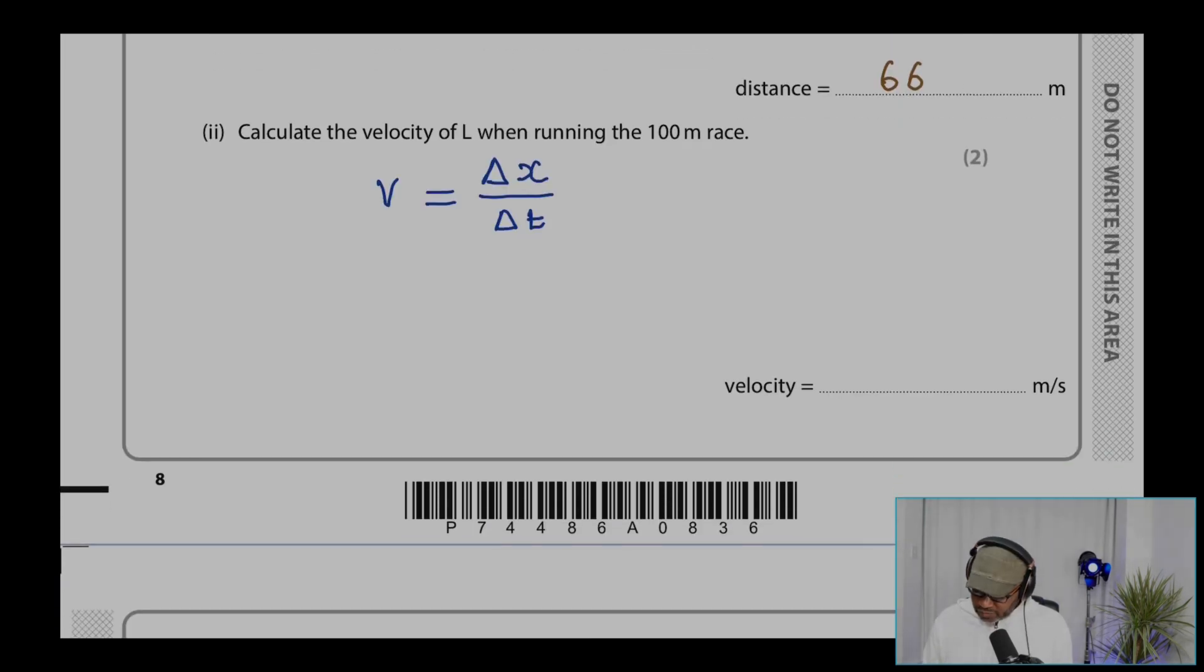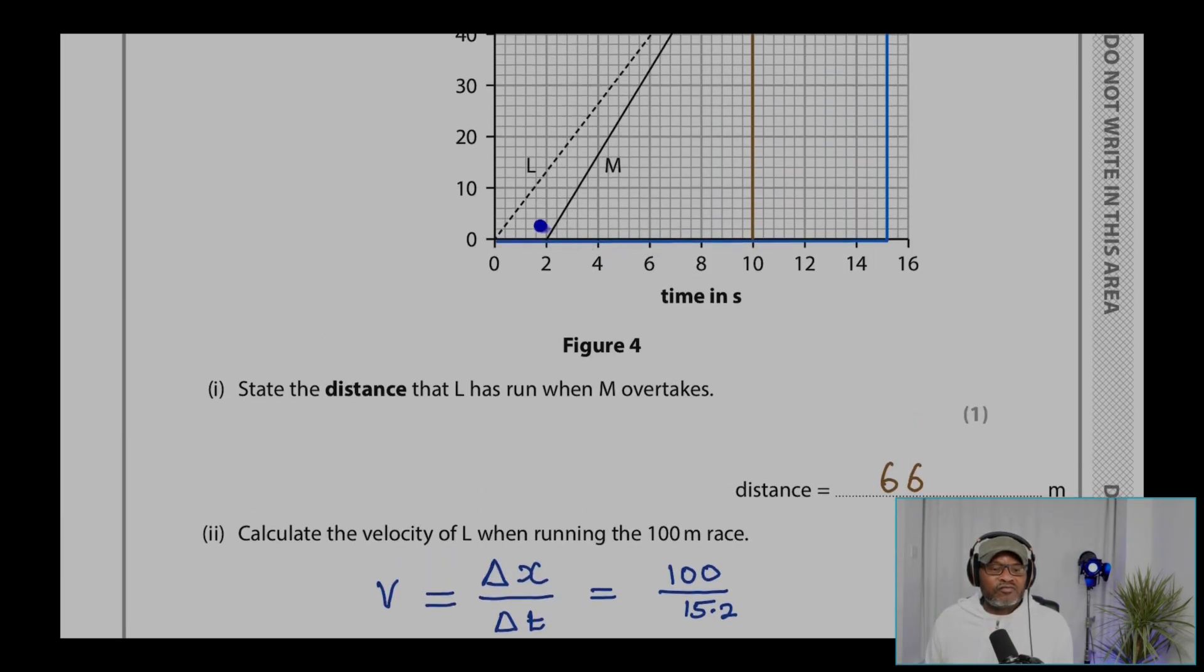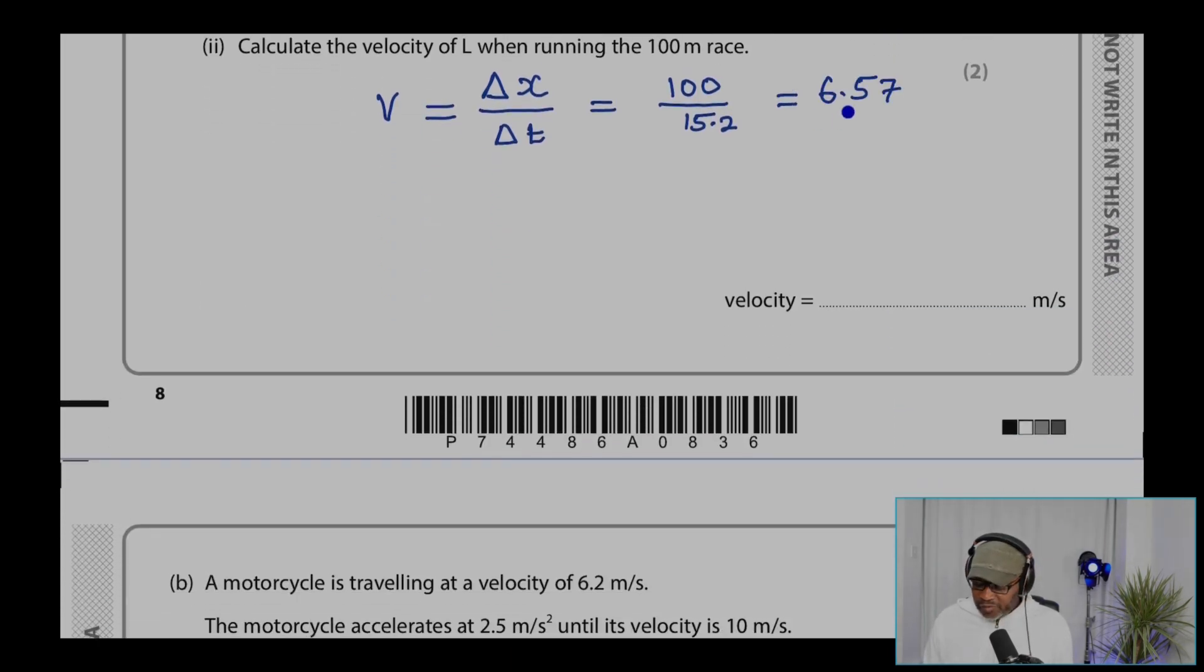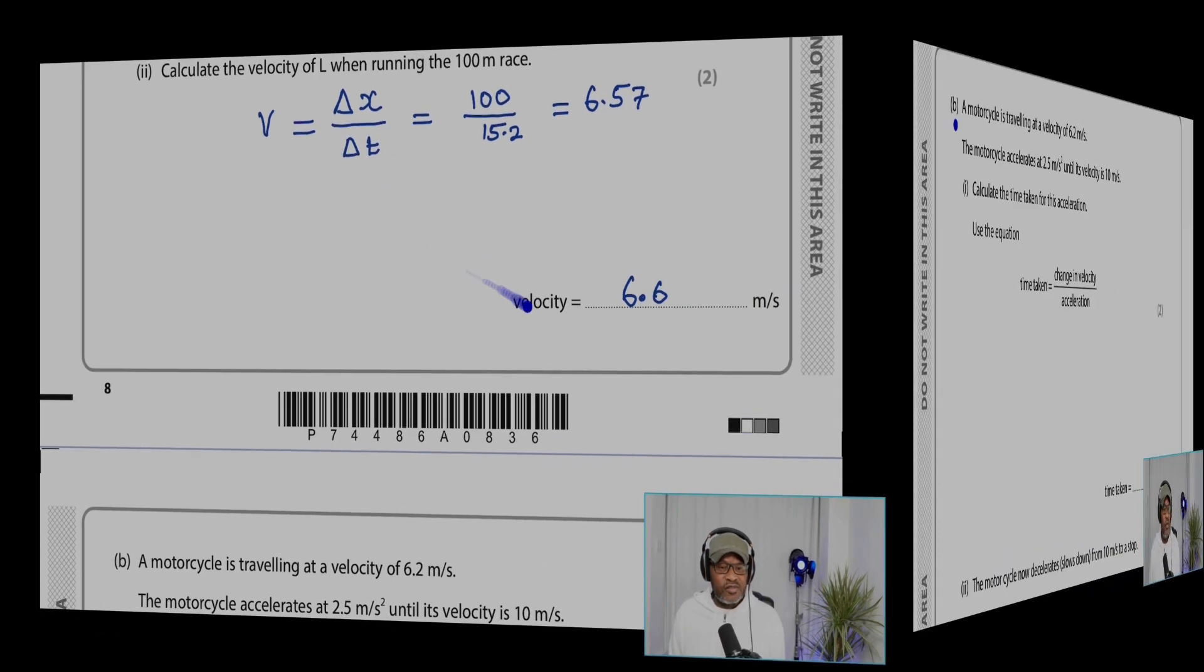So we have to write V is change in distance over the time, and that equals 100 over 15.2. And then that gives 6.57, and that is 6.6 meters per second. That's the velocity.